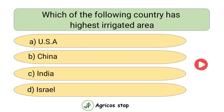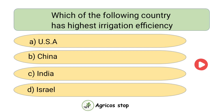Which of the following countries has the highest irrigated area? Options are USA, China, India, and Israel. The answer is India. India has the highest irrigated area in the world.